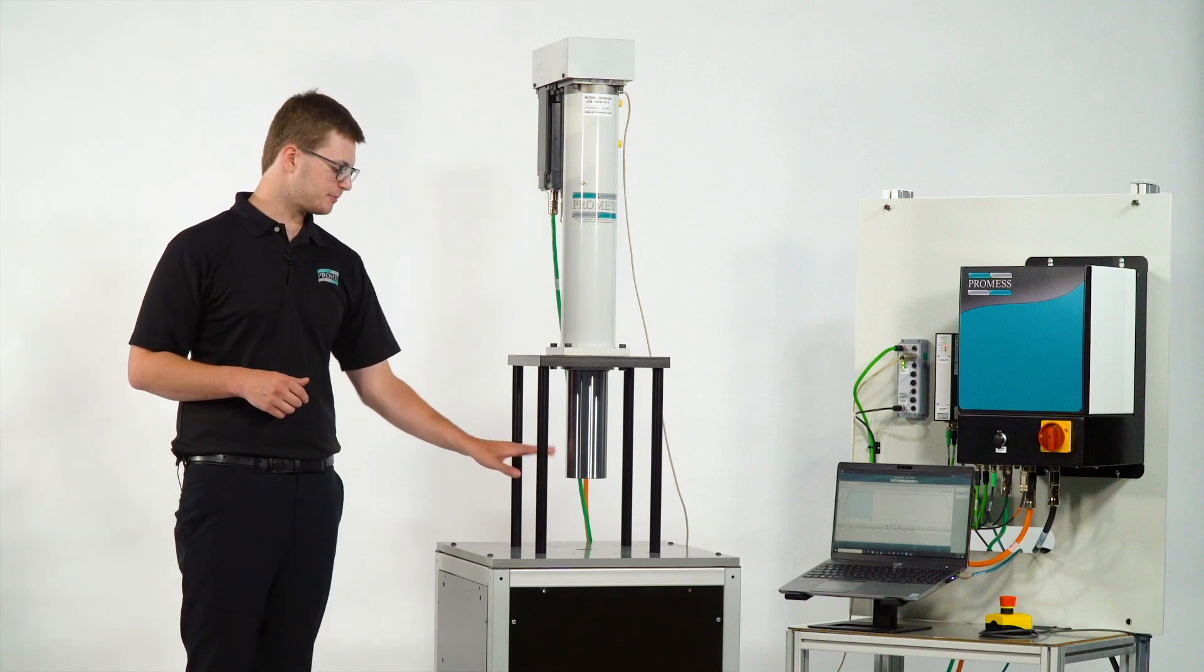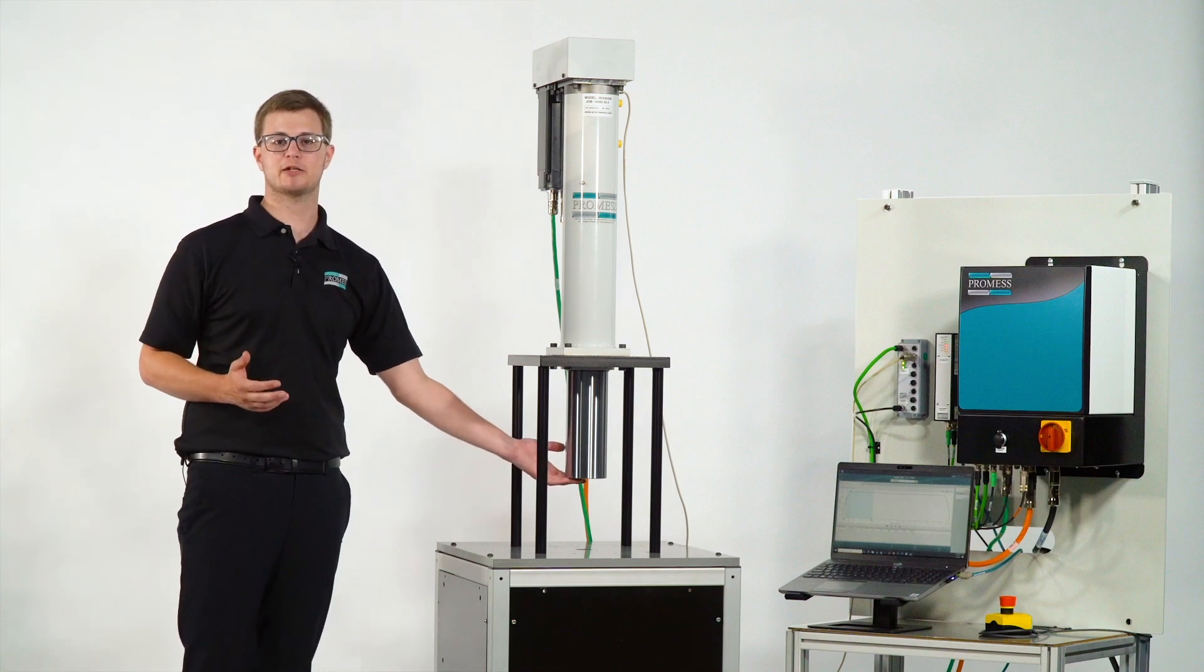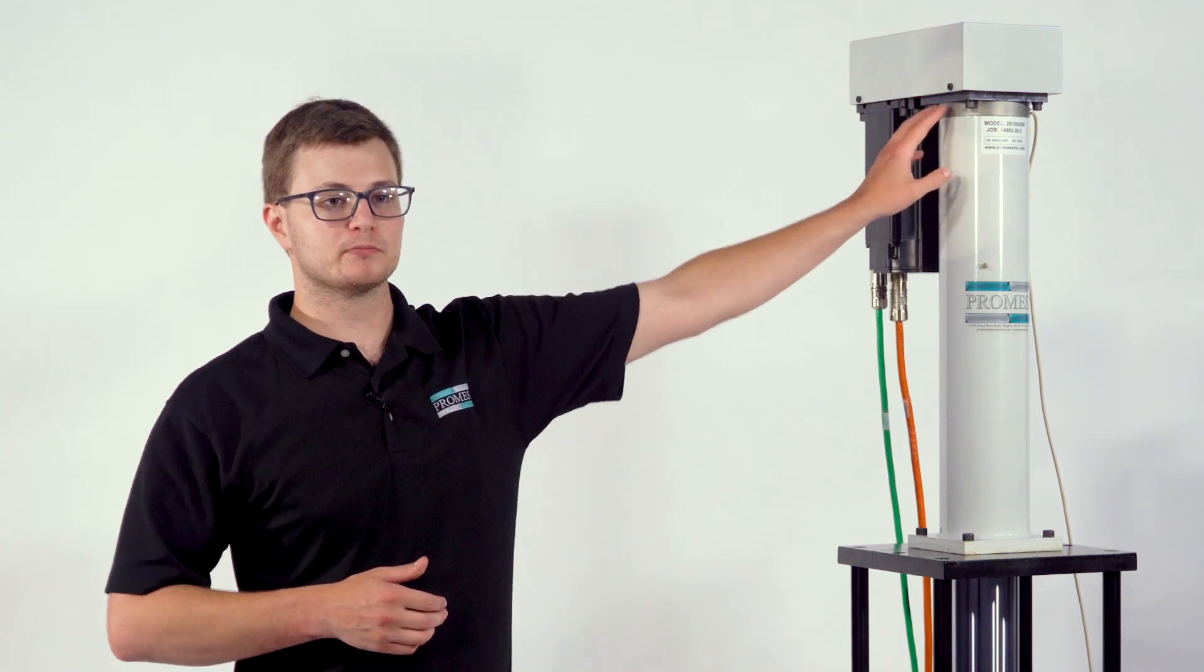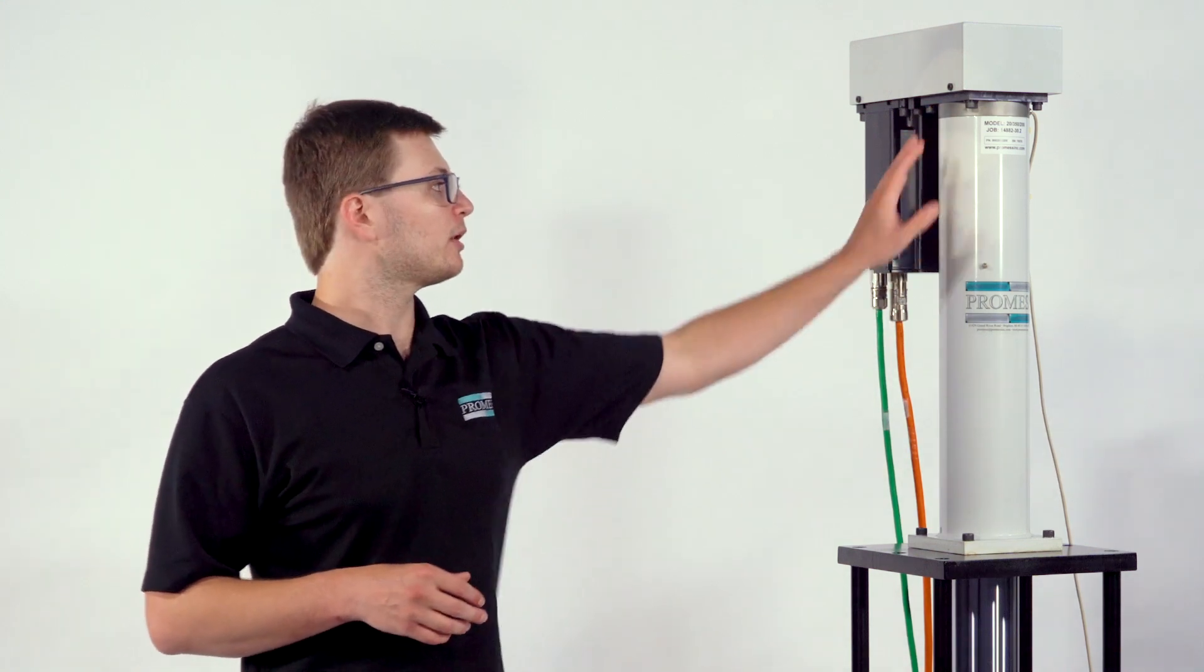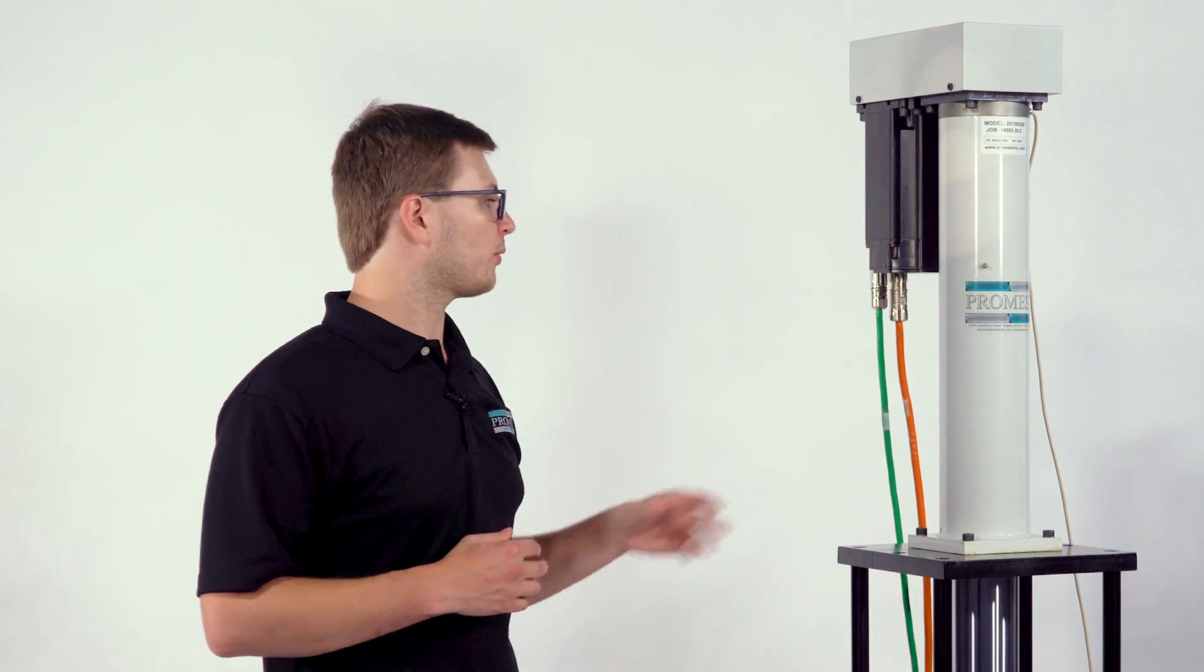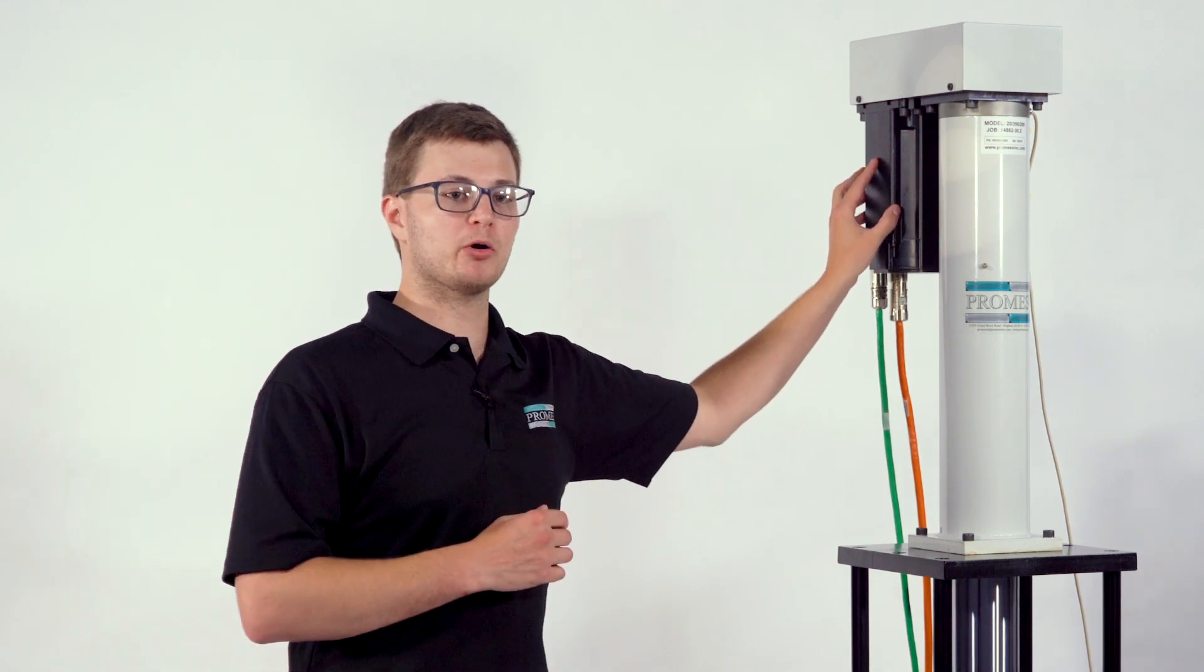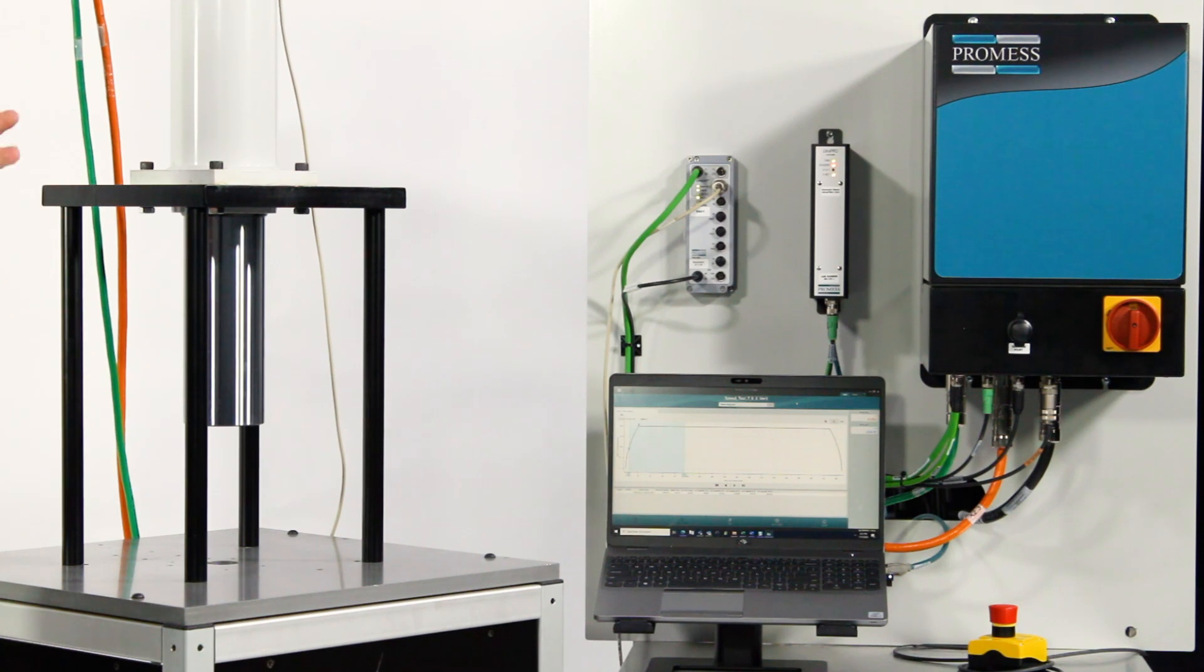As the press begins moving downward and experiencing force, that is read by the load cell. When we couple the load cell measurements along with the positional measurements from the motor, those get passed over to the UltraPro system.